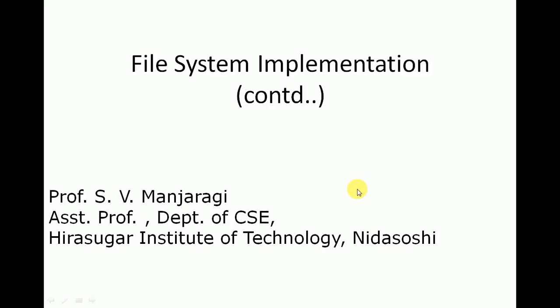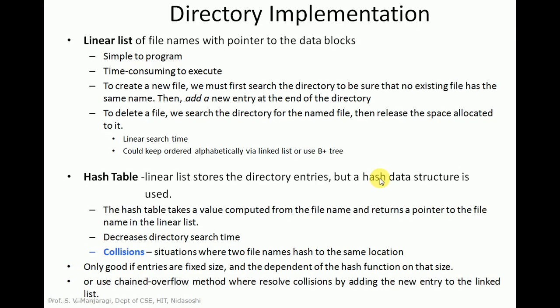Dear students, today we shall continue the topic file system implementation. We shall begin with directory implementation. A directory is basically containing other files — it acts as a container for different related files. A group of files are put into a directory, also called a folder. There are different ways to implement a directory with the operating system.